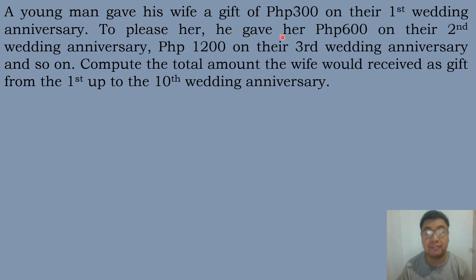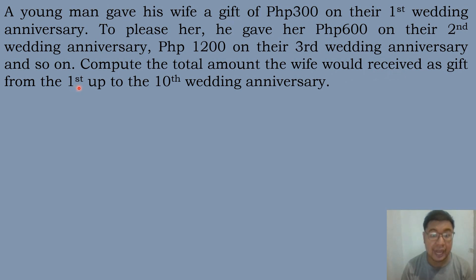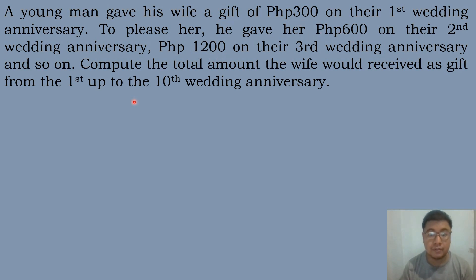Let's have our next problem. A young man gave his wife 300 pesos on their first wedding anniversary. To please her, he gave her 600 pesos on the second, 1,200 pesos on the third, and so on. Find the total amount the wife would receive from the first up to the 10th wedding anniversary. This is an example of a geometric sequence because the gift doubled each year: 300 to 600 to 1,200.